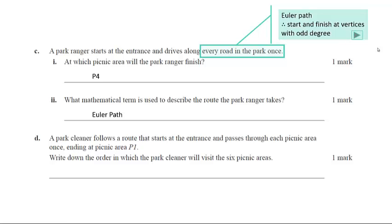Part D: a park cleaner follows a route that starts at the entrance and passes through each picnic area once ending at P1. So again now we need to consider what is the route that they're taking, and in this case they only need to go through each picnic area which are represented by the vertices, so therefore a Hamilton path.